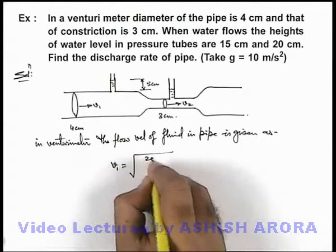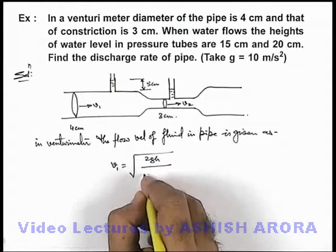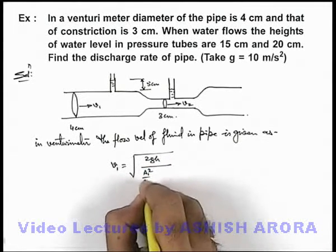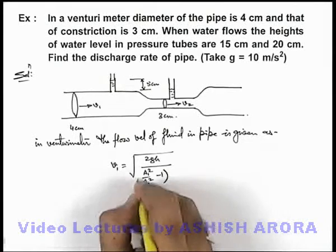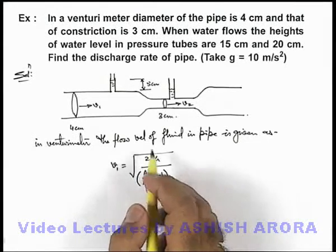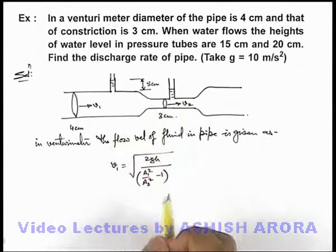And this v1 can be given by the expression root of 2gh by a1 square by a2 square minus 1, where a1 and a2 are the cross sectional areas of pipe and the constriction region.